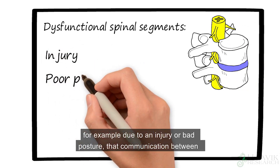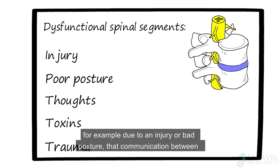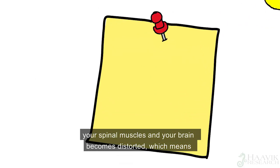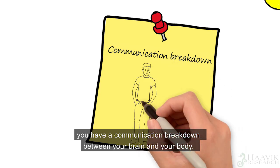But if your spinal segments begin to move in a dysfunctional way, for example due to an injury or bad posture, that communication between your spinal muscles and your brain becomes distorted, which means you have a communication breakdown between your brain and your body.